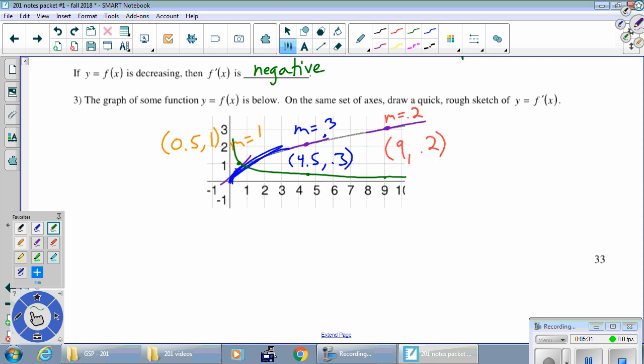And so this one actually is going to turn around, not turn around, but it's going to go up forever and have the y-axis as its vertical asymptote. So there's our rough sketch of y equals f prime of x.